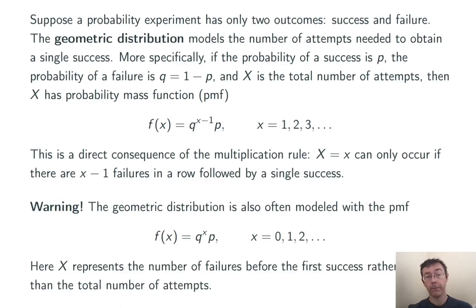One important warning. The geometric distribution is often also modeled with this PMF, Q to the X times P, where X can be 0, 1, 2, and so on. Here, X is the number of failures before the first success, rather than the total number of attempts. Obviously, these two representations are completely equivalent. You just have to add or subtract 1 from X to get from one to the other. You can tell which one a particular author is working with just by looking to see if X equals 0 is included in the support.